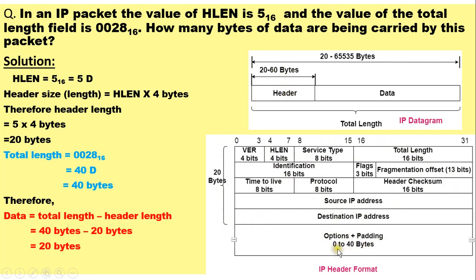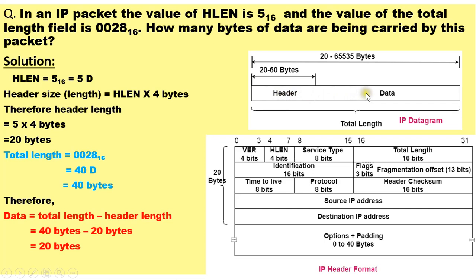The options can be 0 to 40 bytes, so with options the header size of IPv4 can be extended up to 60 bytes. The total length field is equal to the header plus the data — that is, the total length of the IP datagram is the header size plus the data.